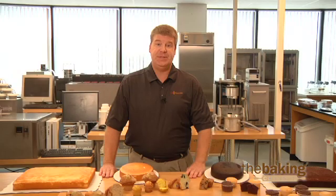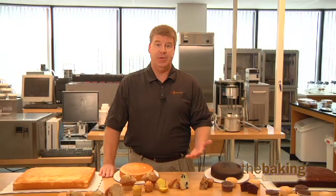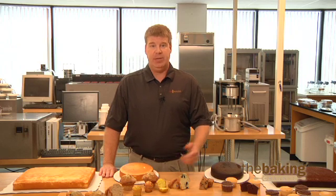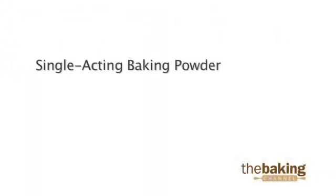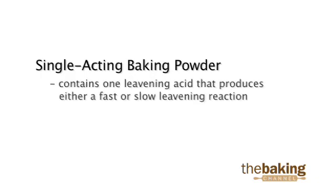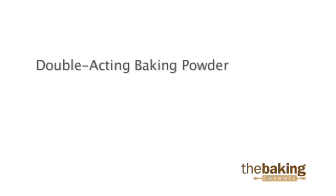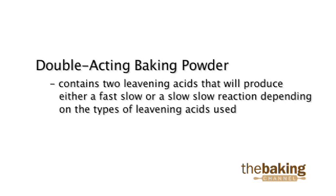A common question we receive from our customers is: what is the difference between a single acting baking powder and a double acting baking powder? The single acting baking powder contains one leavening acid that produces either a fast or slow leavening rate of reaction. The double acting baking powder will contain two leavening acids and will produce either a fast-slow or a slow-slow reaction, depending on the type of leavening acids used.